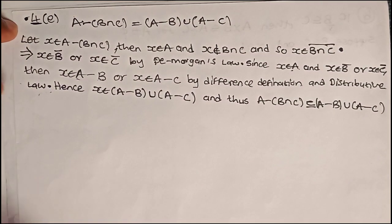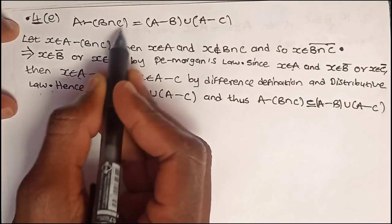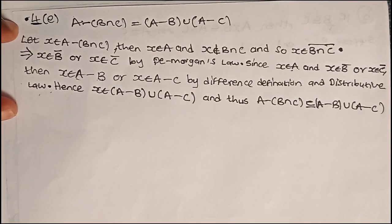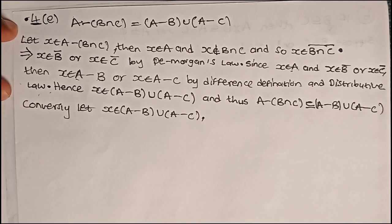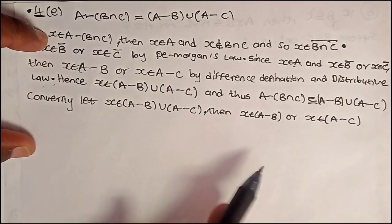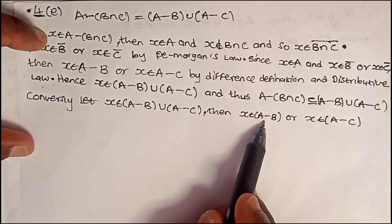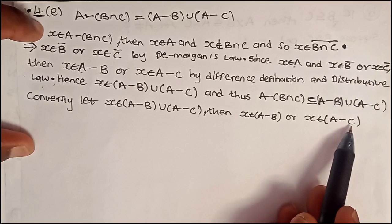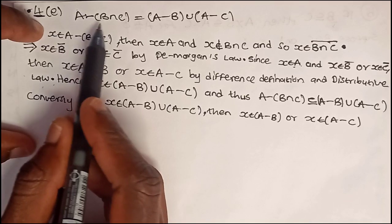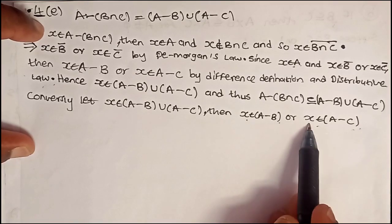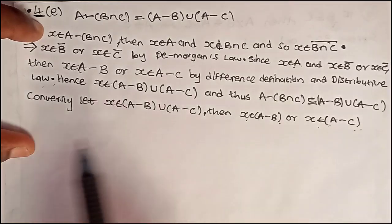We have shown that if X is in A minus (B intersect C), then X will be in (A minus B) union (A minus C). Conversely, let X be an element of (A minus B) union (A minus C). Then X is in A minus B or X is in A minus C. Here we'll have to prove by cases. Case 1: if X is in A minus B, will we get X being in A minus (B intersect C)? Case 2: if X is in A minus C, will we get X being in A minus (B intersect C)? The reason is that with the union, we are not sure which set contains X, but we know that one of the sets contains X. That's why we have to check each case — especially with union, this is very important.